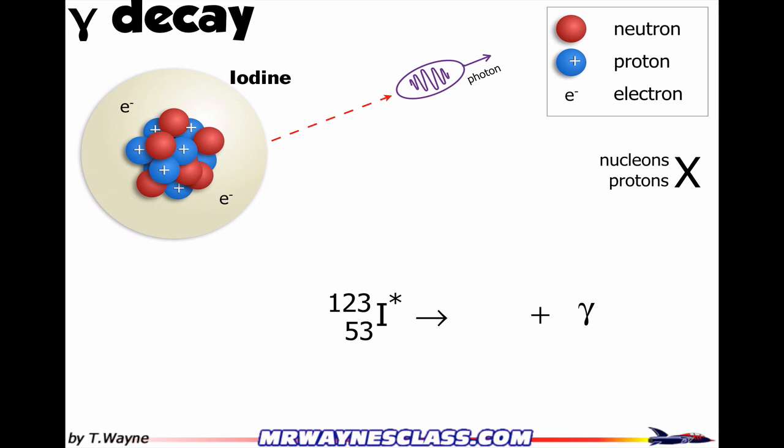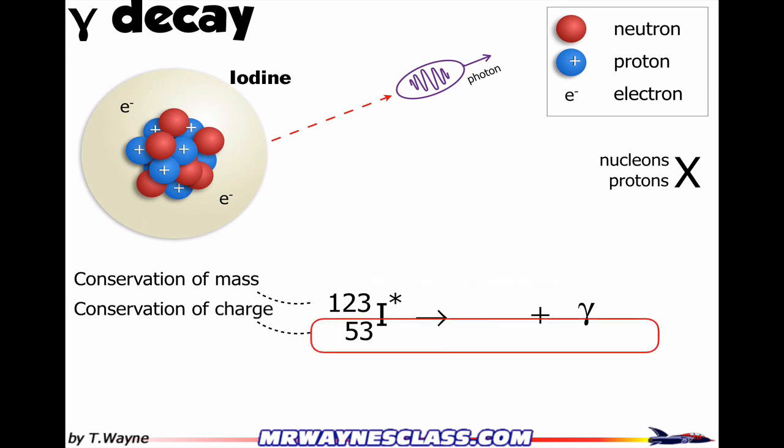And gammas don't have any charge. Our moving photons also don't have any mass. So when I conserve mass, there's really nothing to do. It's just going to be 123. And when I conserve charge on the bottom, it's still going to be 53.